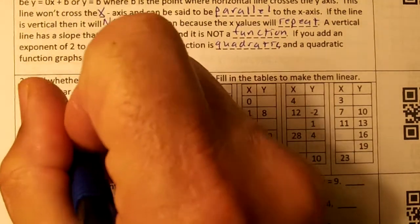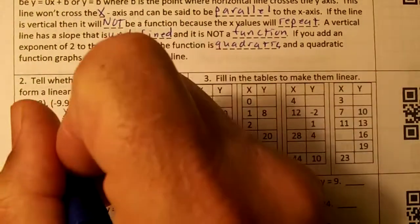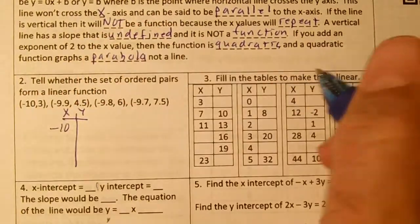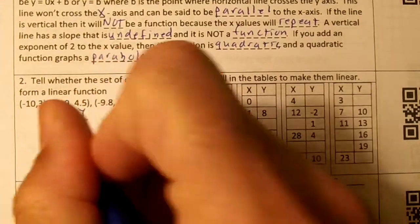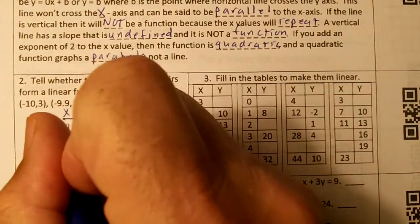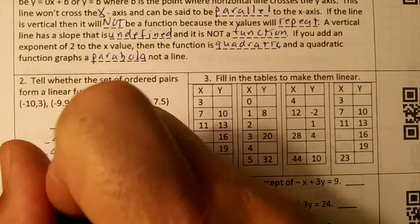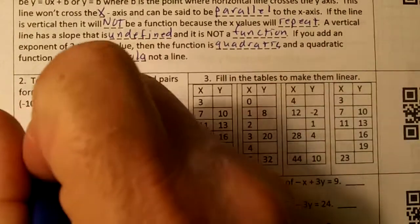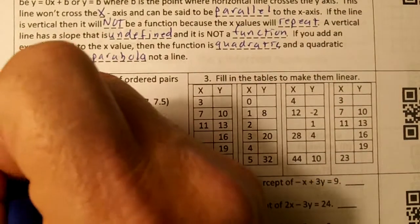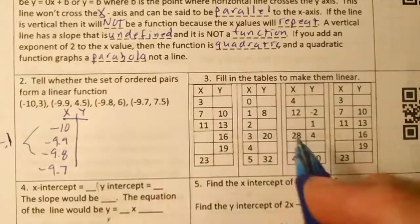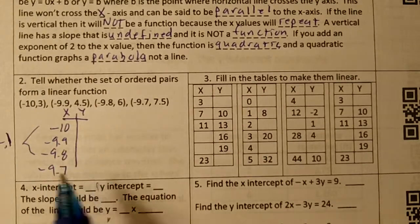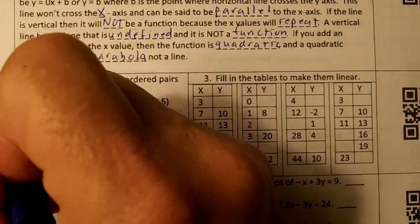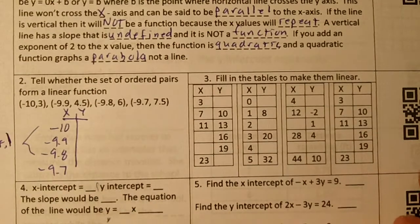So I'll make a t-chart. I'll put x on the left and y on the right. My x values are negative 10, negative 9.9, negative 9.8, and negative 9.7. Those values are getting smaller by a value of negative 0.1, or actually a positive 0.1. They're increasing by 1 tenth.